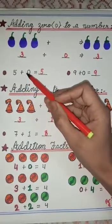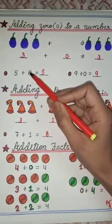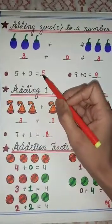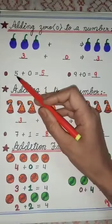5 plus 0. 0 is nothing. If we will add nothing to 5, we will get 5 only, the earlier number which we had.